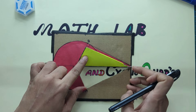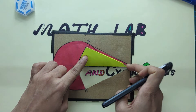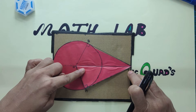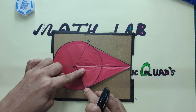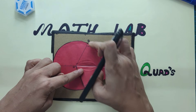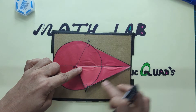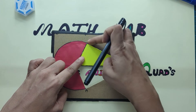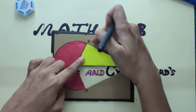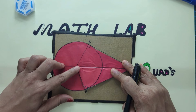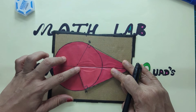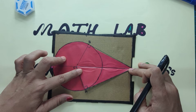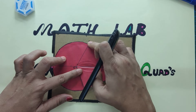As I superimpose, I see that PA is one tangent and PB is another tangent. The length of PA is the same as PB because they perfectly superimpose. So the first property of tangents drawn to a circle from an external point is that they are of equal length.